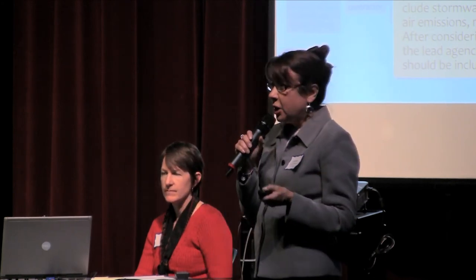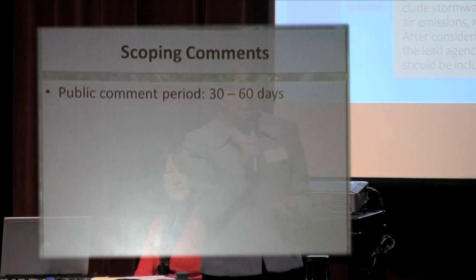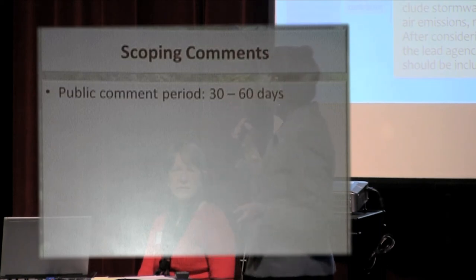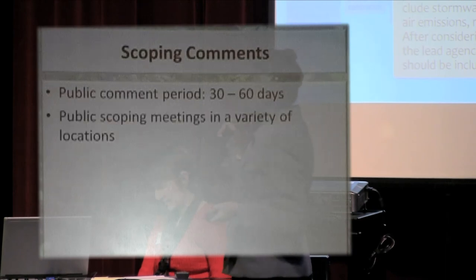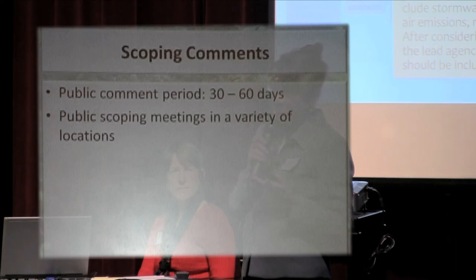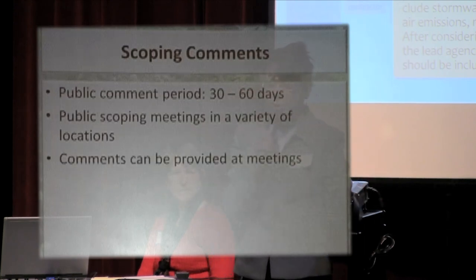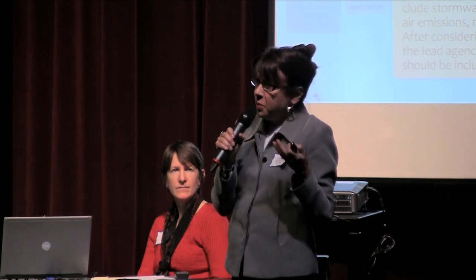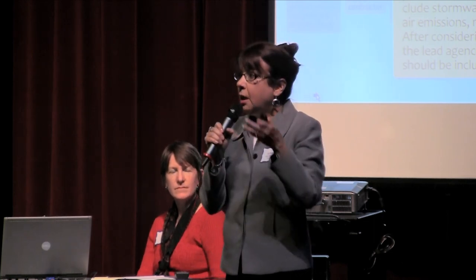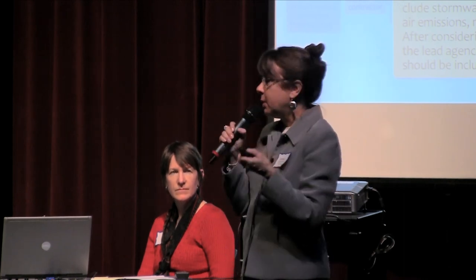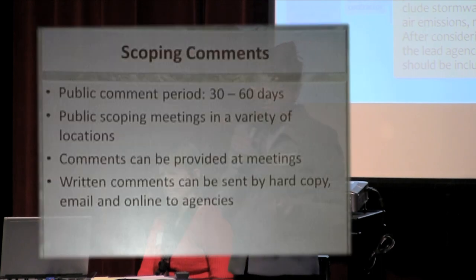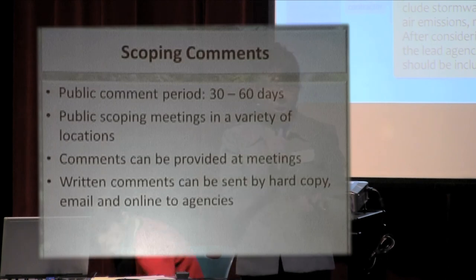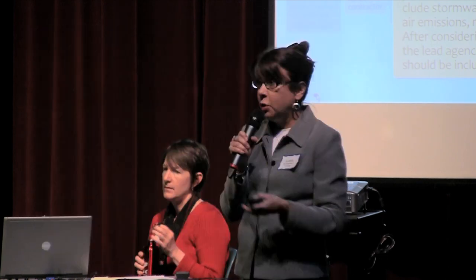Once the DS comes out and scoping begins, the public comment period will be 30 to 60 days, combining federal NEPA regulations and SEPA regulations. The public scoping meetings will be in a variety of locations — at a minimum we must provide three, and there may be more. You can provide comments at these public scoping meetings. They are not public hearings — people have the opportunity to get up to the microphone and provide input. Written comments can also be sent by hard copy, email, and online to the agencies. You do not have to come in person and also provide written comments.